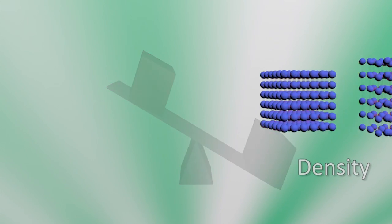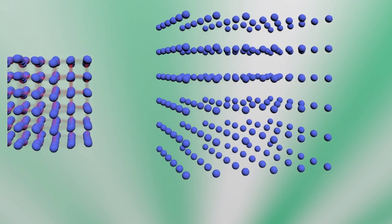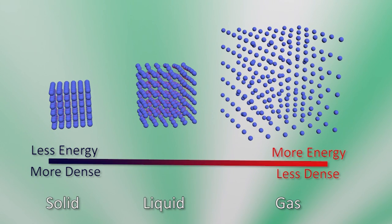The states of matter - solid, liquid and gas - also relate to density. In other words, the more energy there is in a substance, such as heat, usually the less dense it will get.